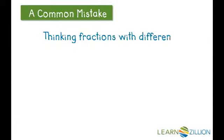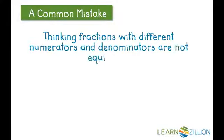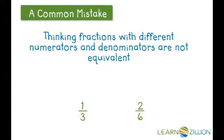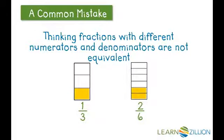A common mistake is thinking that just because the numerators or the denominators are not the same, then the fractions are not equivalent. Here we have one-third and two-sixths. We can clearly see that the numerators and the denominators are not the same. However, if we look at a fractional model for each of these fractions, we will see that they both represent the same amount. Therefore, one-third and two-sixths are equivalent.